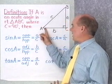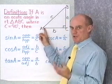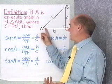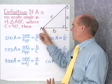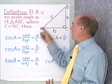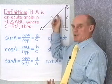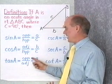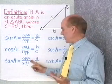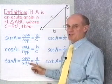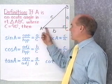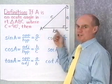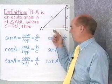For angle A, the side that's adjacent — the leg that's adjacent to angle A — is side B. So cosine is the ratio of B to the hypotenuse. And then the tangent of A is defined to be the ratio of the length of the opposite side to the length of the adjacent side, so A over B.